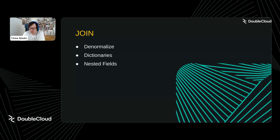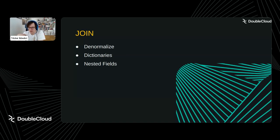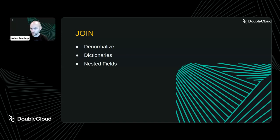Victor asks whether dictionaries are stored in RAM or on disk. It depends on your cluster configuration. With lazy loading, the dictionary is loaded into memory only after the first query hits it. Without lazy loading, it loads at cluster start time. So on the second query at the latest, it's available in RAM.